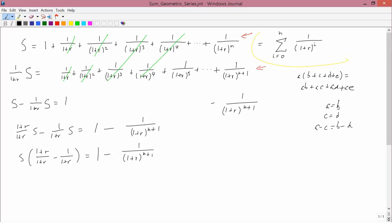The left-hand side, I can simplify what's in parentheses. I have the same denominators, and in the numerator, I have 1 plus R minus 1. This is going to be equal to R. So I have S times R over 1 plus R equals 1 minus 1 over 1 plus R to the N plus 1. So solving for S, multiply both sides by 1 plus R over R.